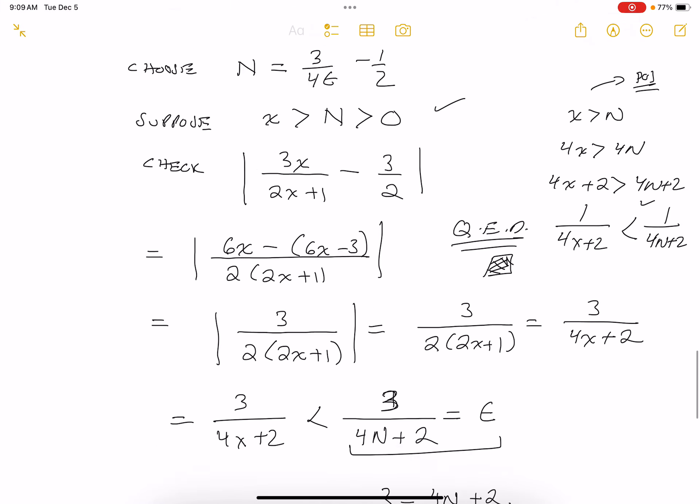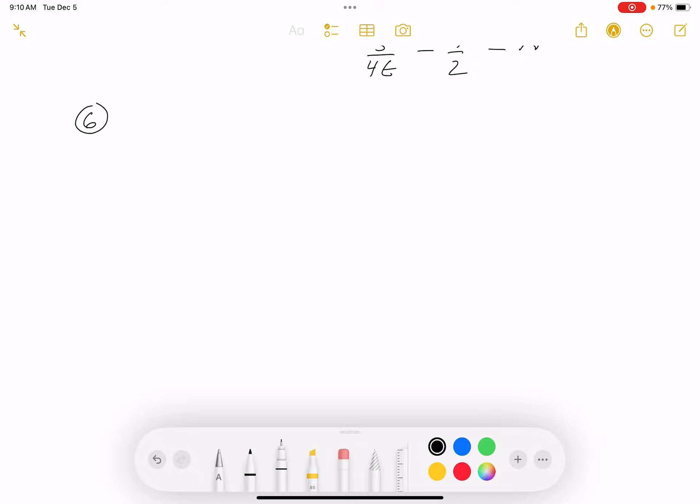All right, so this is number six. I'll write down number six for you. Let me get rid of this and write it down for you. So limit as x goes towards 2, 3x squared is equal to 12. And again, we're using the epsilon-delta definition.